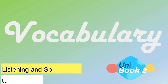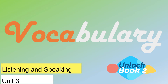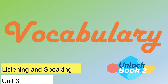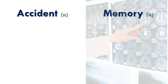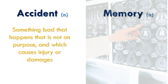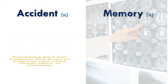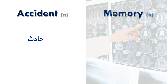Welcome to another video on Vocabulary with Arabic. The first word we look at is 'Accident.' Accident means something bad that happens that is not on purpose and which causes injury or damage. In Arabic: حادث.